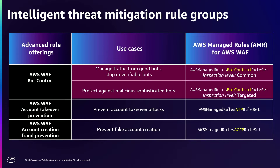Bot detections at the common level are based on traditional bot detection techniques that rely on static request analysis. For customers seeking to protect from malicious, sophisticated bots, we have the targeted rule offering. Bot detections at this level are more advanced — we do things like browser interrogation, behavioral heuristics, and device fingerprinting to understand if requests are coming from a real browser. There is also a built-in machine learning capability in our targeted bot rules — if requests are indicative of coordinated bot activity, our ML model can predict this and generate the appropriate labels.